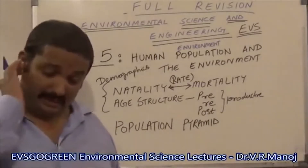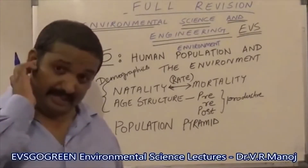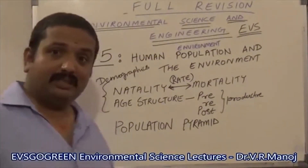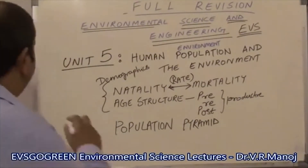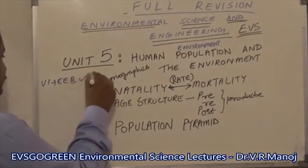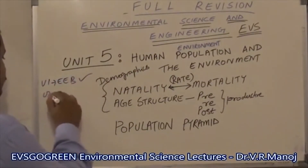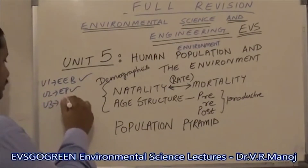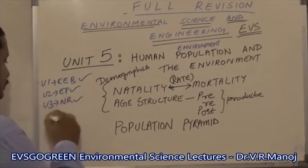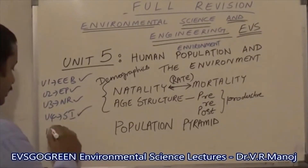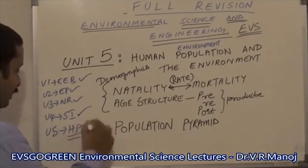Now we are into the revision of the last unit of EVS, which is Human Population and Environment. Unit 1 is Environment, Ecosystem, Biodiversity. Unit 2, Environmental Pollution. Unit 3, Natural Resources. Unit 4, Social Issues. Unit 5, Human Population.